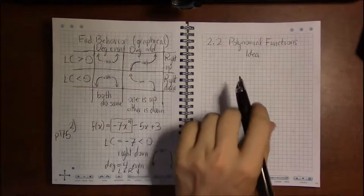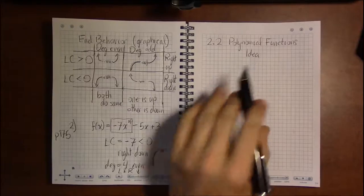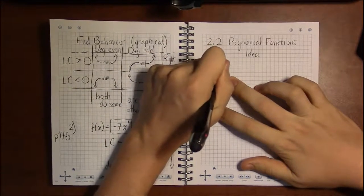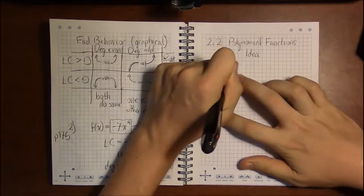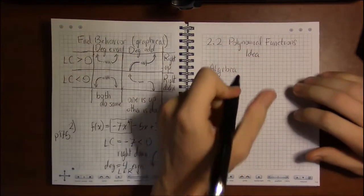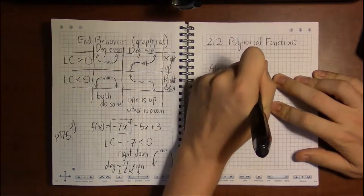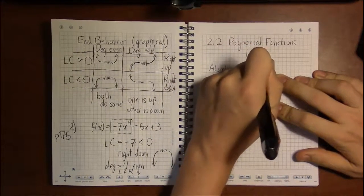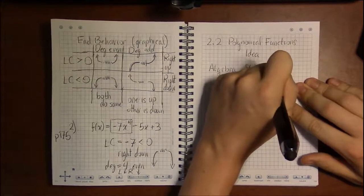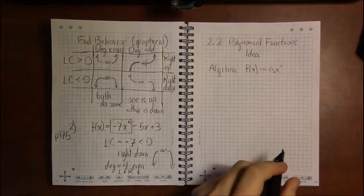All right, so we've mentioned the algebraic form of a polynomial and we've started connecting the algebra to the graphs with end behavior in the last video. So now we're going to continue that and talk about intercepts—x-intercepts and y-intercepts.